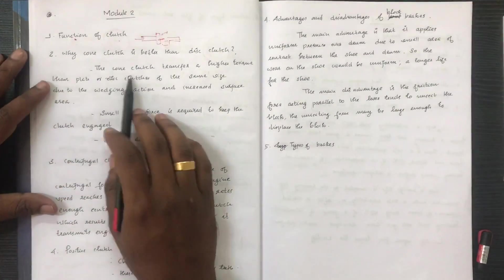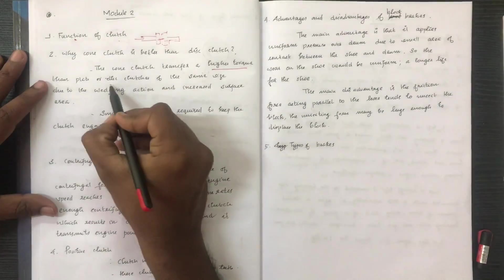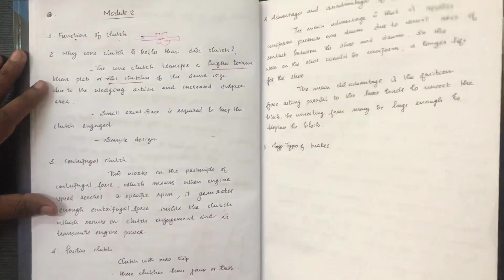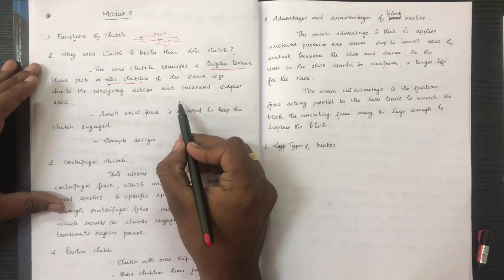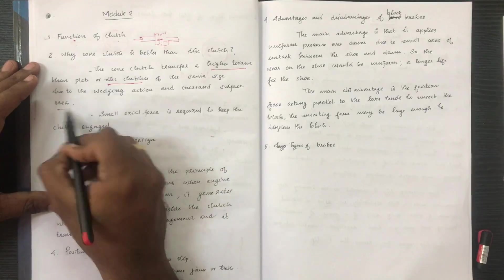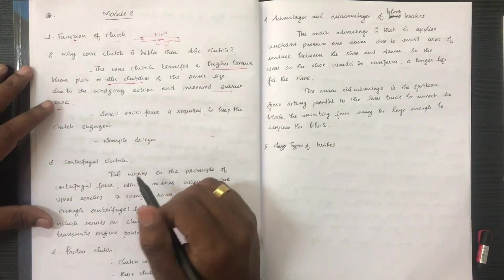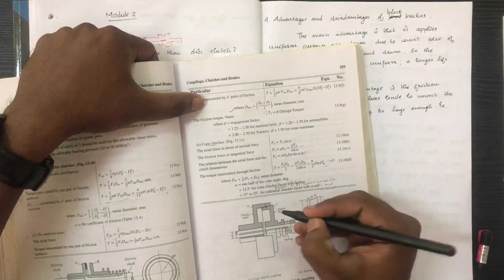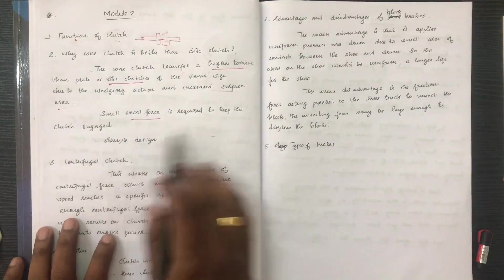The disc clutch is capable of transmitting high torque due to its conical surface contact. It achieves the same size torque transmission due to the wedging action and the surface area. This is a simple design for torque transmission.